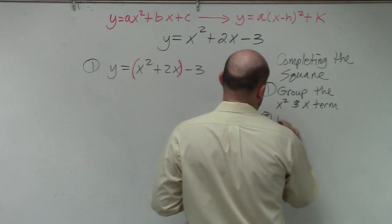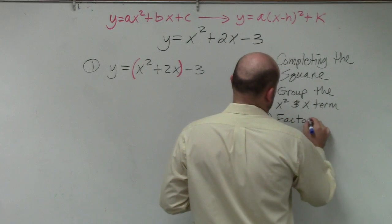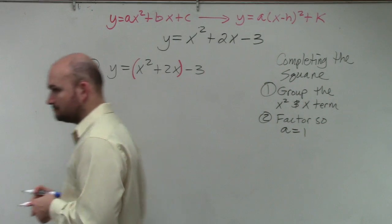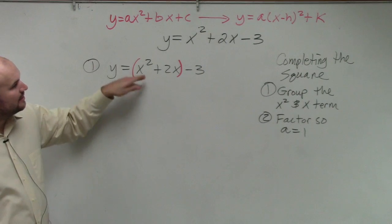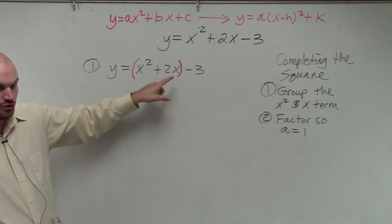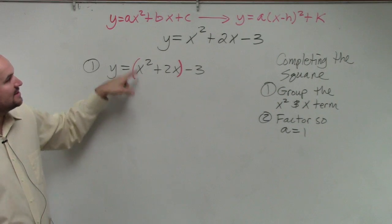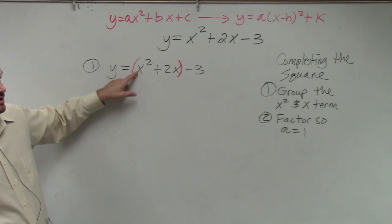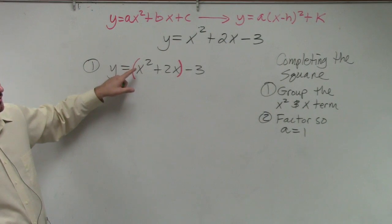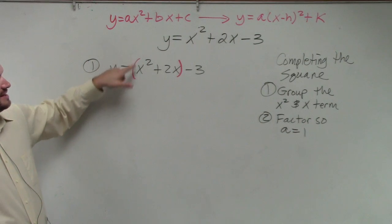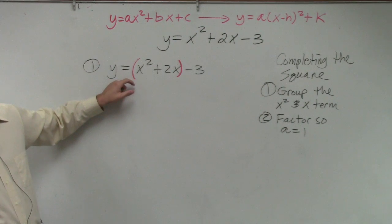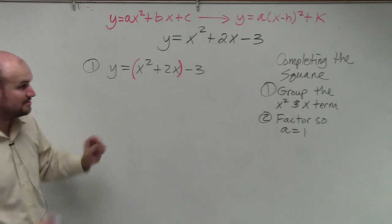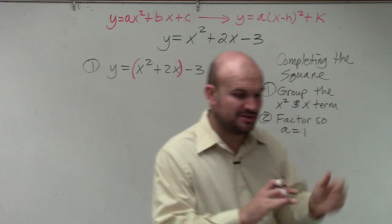Step number two: factor, so a is equal to 1. You're only going to be factoring out of your group. Remember, a is the coefficient of your quadratic term. Is a equal to 1? Is the coefficient of my x² equal to 1? Yes. So I don't need to do step number two.